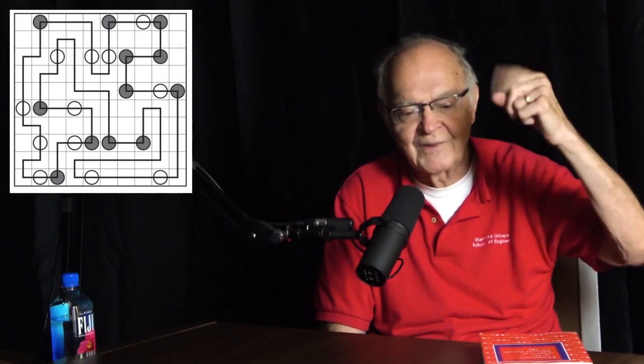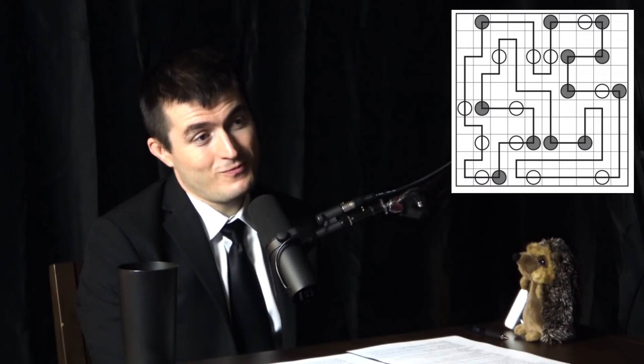Do you know the game called Masyu, M-A-S-Y-U? It's a great recreation. Sudoku is easier to understand, but Masyu is more addictive. You have black and white stones like on a Go board, and you have to draw a path that goes straight through a white stone and makes a right angle turn at a black stone. It's a really nice puzzle — visual but not numerical.